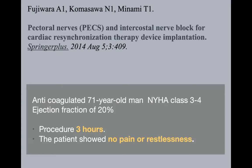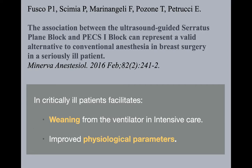Looking at very early papers, the PECS block was quickly adopted for applications beyond breast surgery — for example, cardiac resynchronization therapy. Interestingly, when it came to very sick patients who deserved the best and most reliable technique, the block that was considered less reliable was chosen. Yet it worked very well, because they were given the most difficult cases. A patient with NYHA class 3-4 and ejection fraction of 20% had a three-hour procedure performed under the block alone, with no pain and no risk. It delivered.